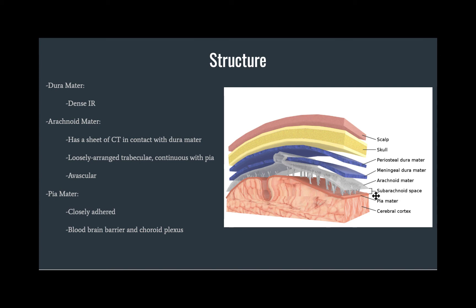The innermost layer, the pia mater, is closely adhered to the brain itself. It does not directly contact nerve cells or nerve fibers — it is instead separated by a thin layer of astrocyte foot processes which comprise the blood-brain barrier. The blood vessels that extend from the subarachnoid space into the brain are surrounded by the pia mater to form and maintain that blood-brain barrier.